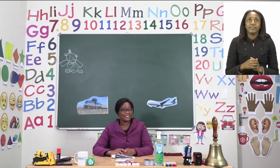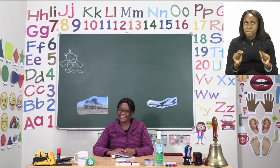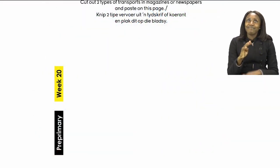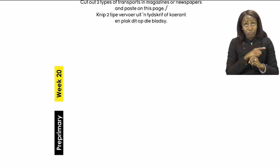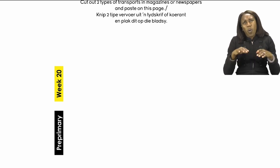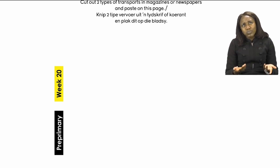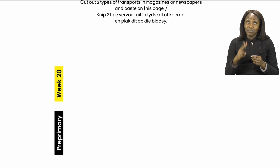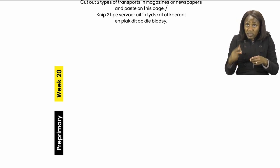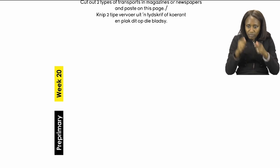For our lesson today, boys and girls, let us start on page 24. On page 24 there's nothing on there — that's because it's going to be your job to fill it in. You're going to fill in this page by cutting two types of transport from magazines or newspapers, and then paste them on the paper.